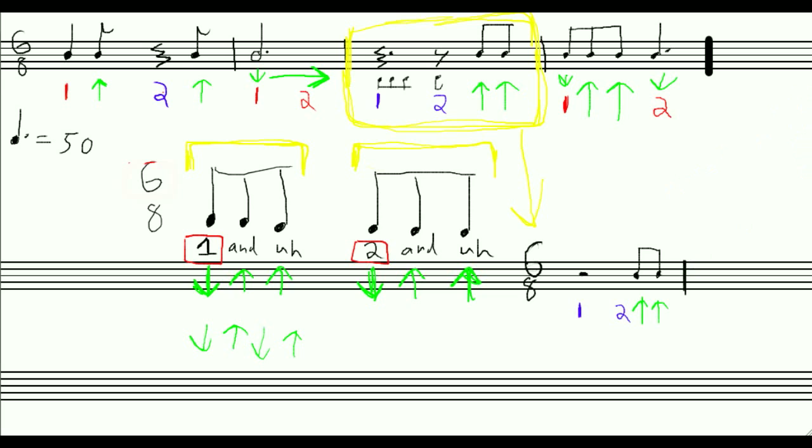So I guess the answer is that I absolutely could have written this measure this way because these two things are equal. They are the same thing, you would play them the same way. But look at this two, because this two is in no man's land. It's a bit harder to read, isn't it? Because in this example we can really clearly see beat one is here, beat two is here. So in this example this is just a little bit harder to read.